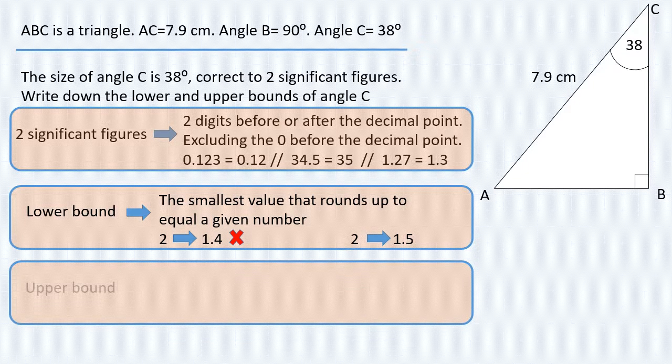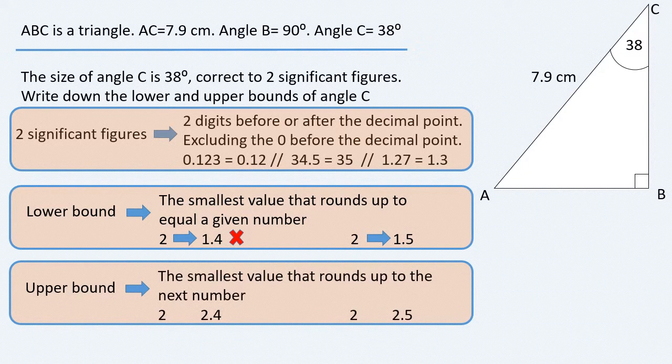Finally, what do we mean by an upper bound? The upper bound is defined as the smallest value that rounds up to the next number. So, if you want to get the upper bound for two, we have to find the least number that can be rounded up to the next number. The next number after two is three. So, what is the smallest number that can be rounded up to three? Can 2.4 be rounded up to three? It cannot. In contrast, 2.5 can be rounded up to three, and hence 2.5 is the upper bound for number two.